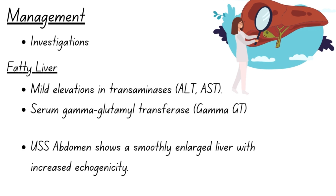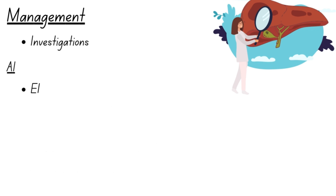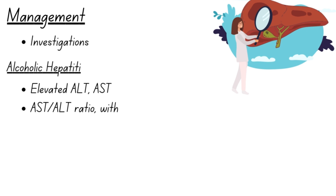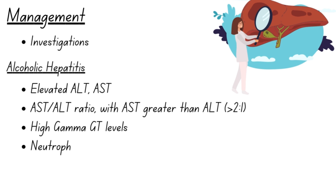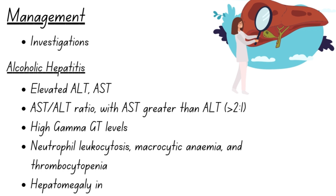An abdominal ultrasound scan reveals a smoothly enlarged liver with increased echogenicity, suggestive of fatty liver. Alcoholic hepatitis is diagnosed based on elevated transaminases, particularly ALT and AST. In severe cases, bilirubin levels may also be high. The AST to ALT ratio, with AST being greater than ALT, supports a diagnosis of alcoholic liver disease, especially when combined with elevated gamma-GT levels.